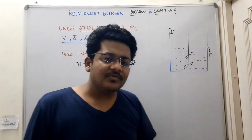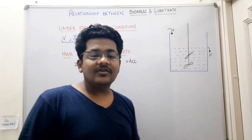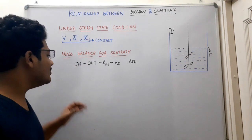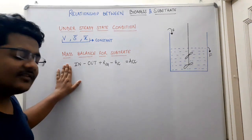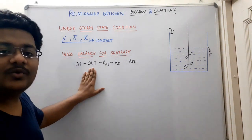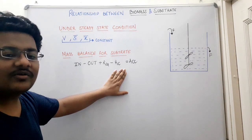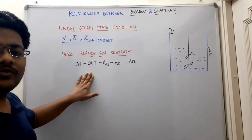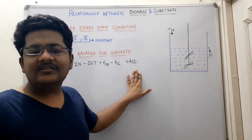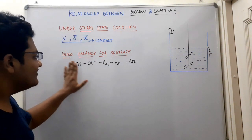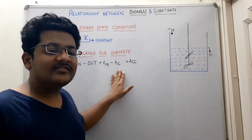For finding the relationship between substrate concentration and biomass, we do a mass balance — a substrate mass balance. We write an equation stating: the rate at which substrate is flowing in, minus the rate at which substrate is flowing out, plus the rate of generation of substrate inside the bioreactor, minus the rate of consumption of substrate inside the bioreactor, equals accumulation.